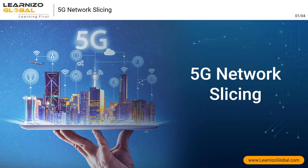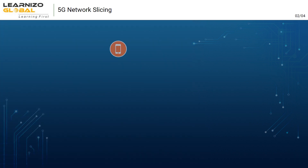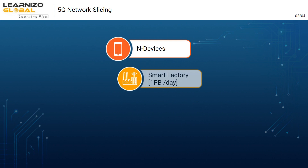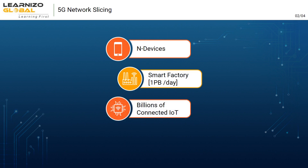This logical sectioning of the network in 5G is referred to as network slicing. To understand a bit more, let us look at the different service verticals of 5G.